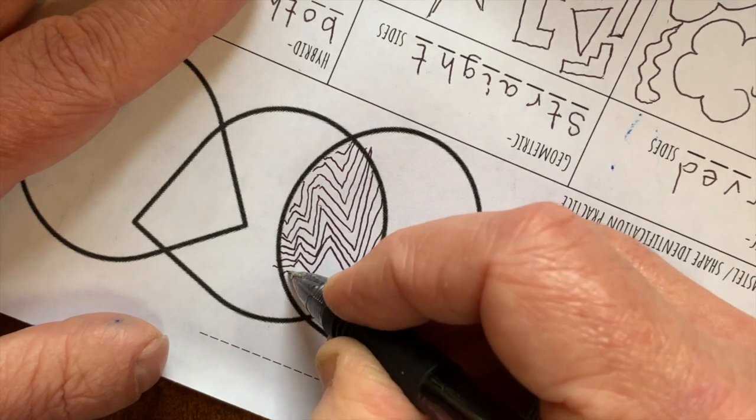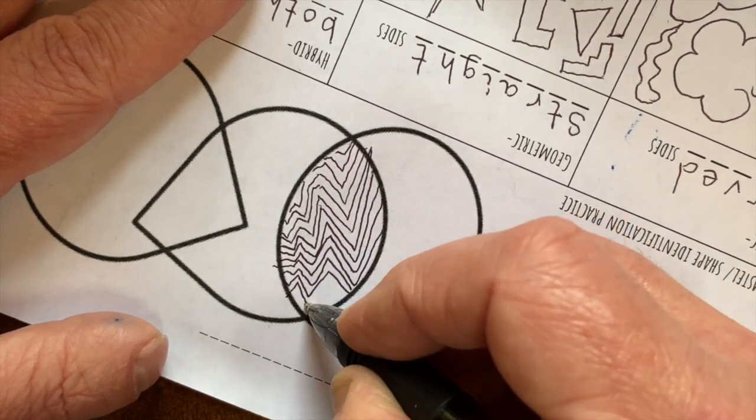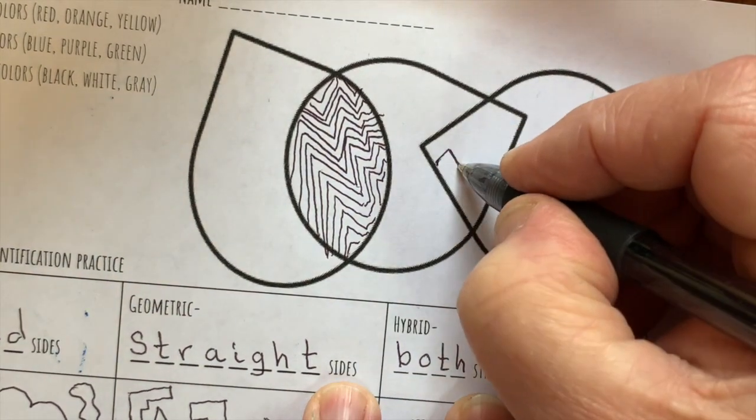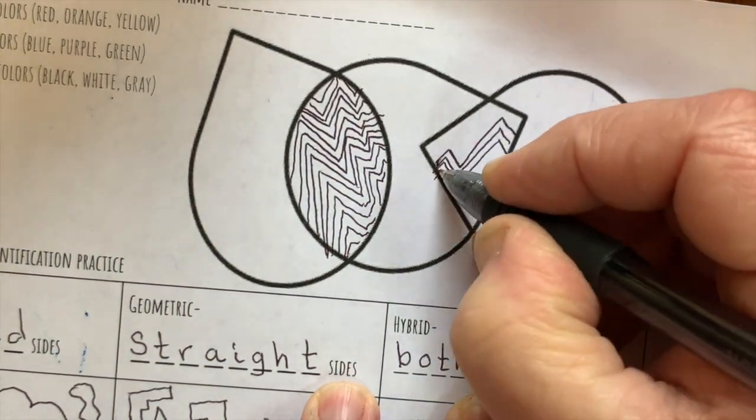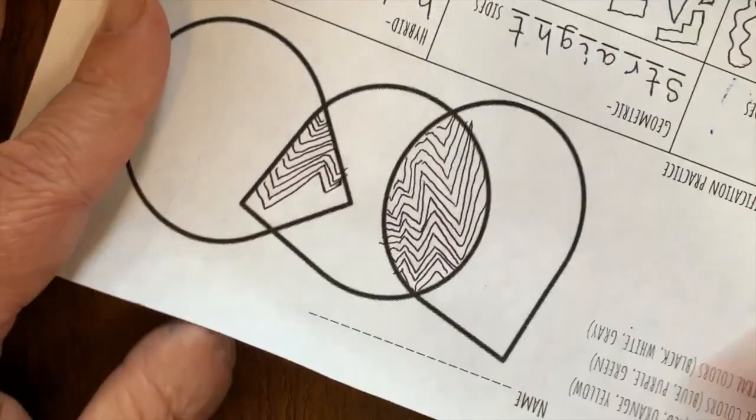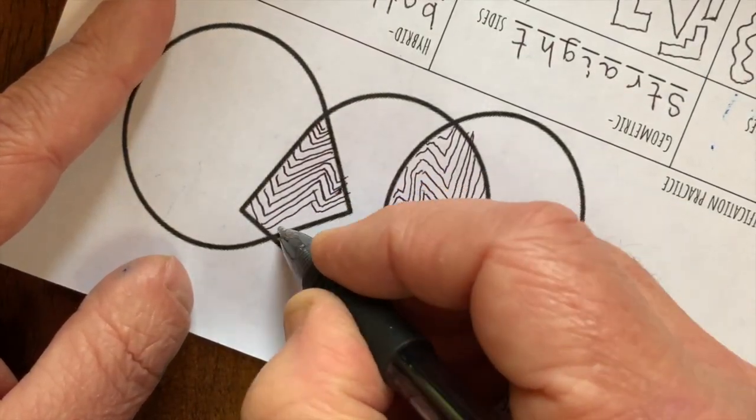Use the same pattern in a different area. I'll choose this fourth area over here, and again the same zigzag pattern, filling up this quadrilateral shape that can be found in the fourth area.